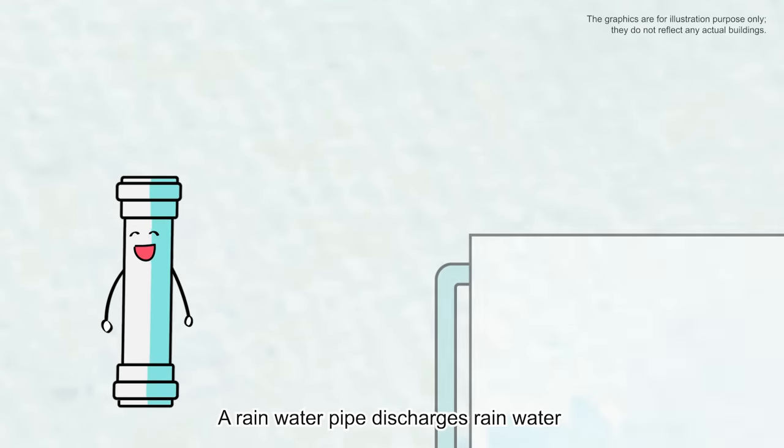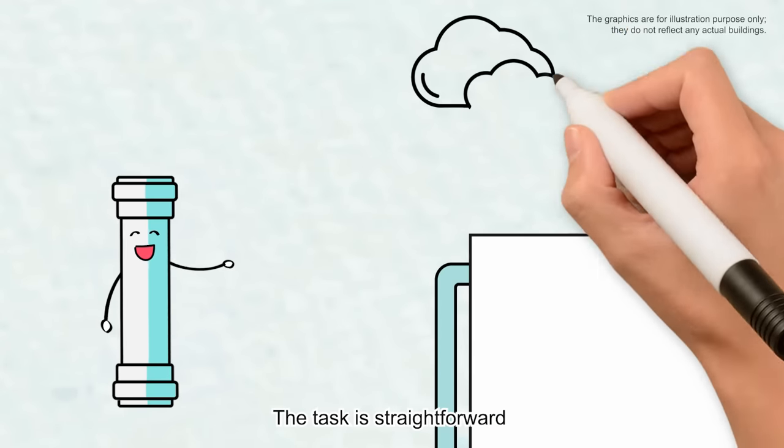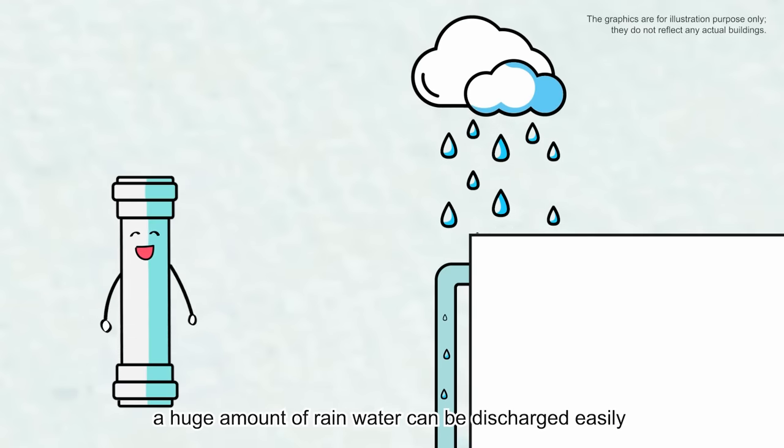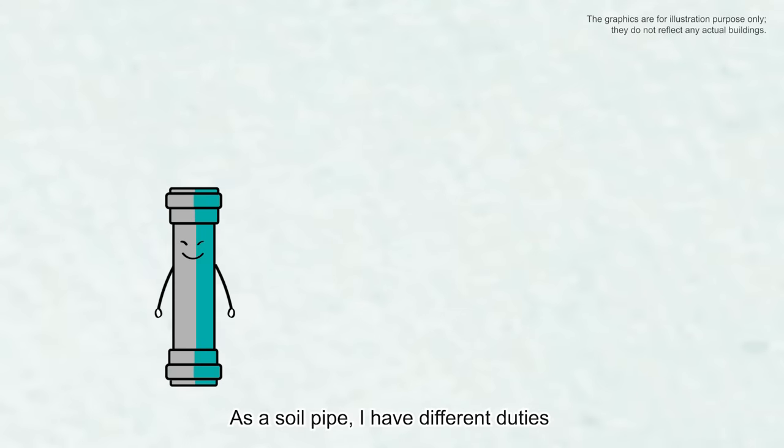A rainwater pipe discharges rainwater. The task is straightforward. By the rainwater pipe alone, a huge amount of rainwater can be discharged easily. As a soil pipe, I have different duties.